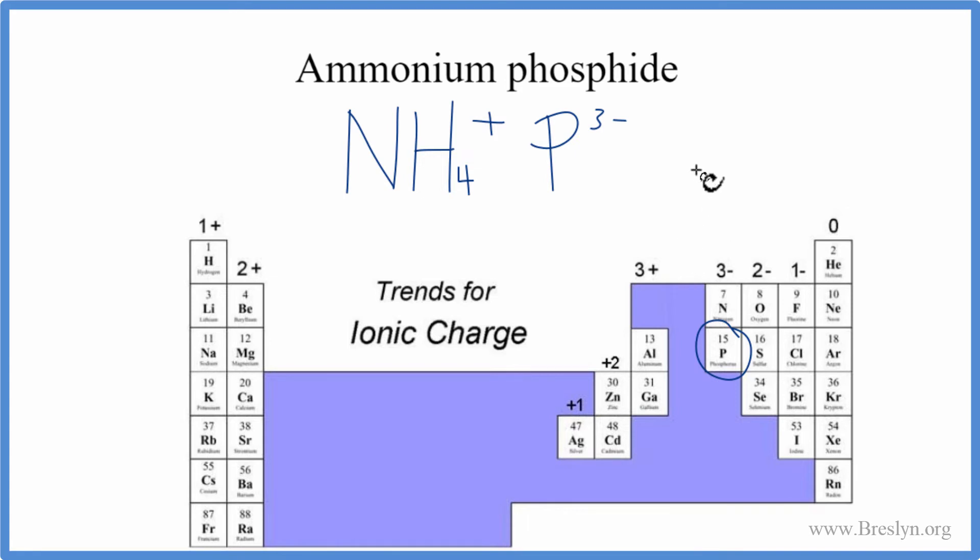So we're close. But at this point, the charges don't balance out. We have a 1 plus and a 3 minus. That's not going to balance out and give us a net charge of 0.